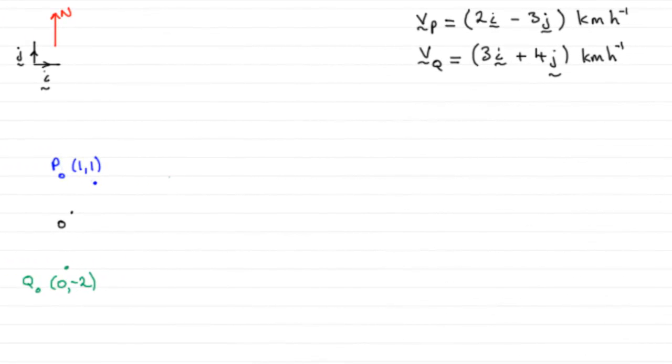Now for this part of the question, we're asked to find the position vectors of P and Q after time t hours. And what I've done is I've just added on the initial position vectors of P and Q at 2pm. That's when the time t I've set to 0.